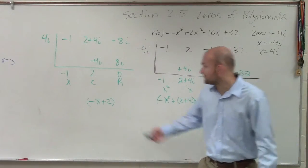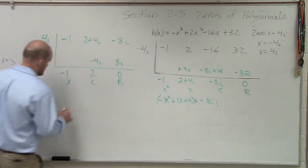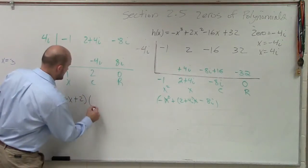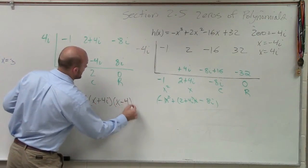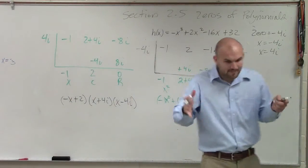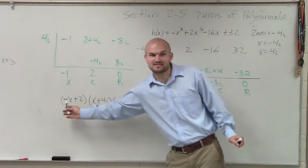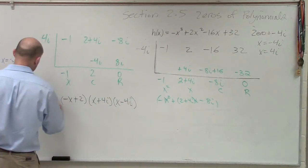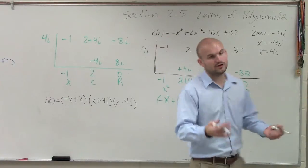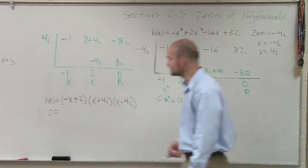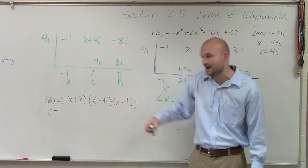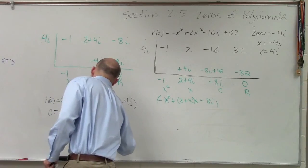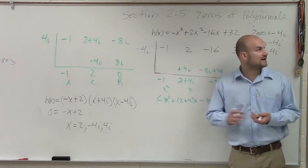That's my last factor. So I have negative x plus two as a factor. All of my zeros I can write as factors: x plus 4i times x minus 4i, and when I write my linear factorization, I take my polynomial and write it as a product of all its linear factors. Setting negative x plus two equal to zero gives x equals two. So all my zeros are x equals two, negative 4i, and positive 4i. I took one zero and found all the remaining zeros.